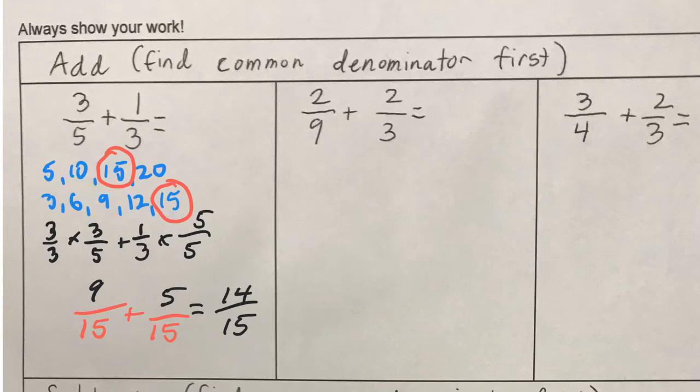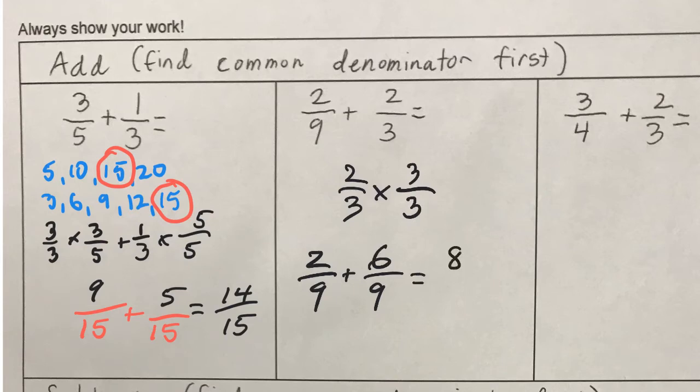2 ninths plus 2 thirds. We need a common denominator. And I can already tell you, 3, 6, 9. 9 is our common denominator. We're set there. So, 2 ninths is okay. And can we make 2 thirds into ninths? Sometimes you can do that in your head. But if not, 2 thirds times what would give you ninths as a denominator? It's 2 thirds times 3 thirds. So, there you have it. And there's your answer.